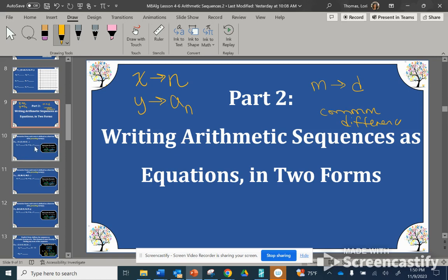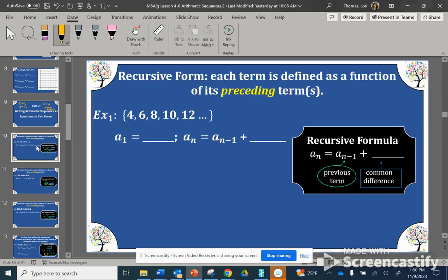So arithmetic sequences are types of linear functions. So let's go back to our first example, and we know that our common difference was 2, 4, 6, 8, 10, 12, and so on.